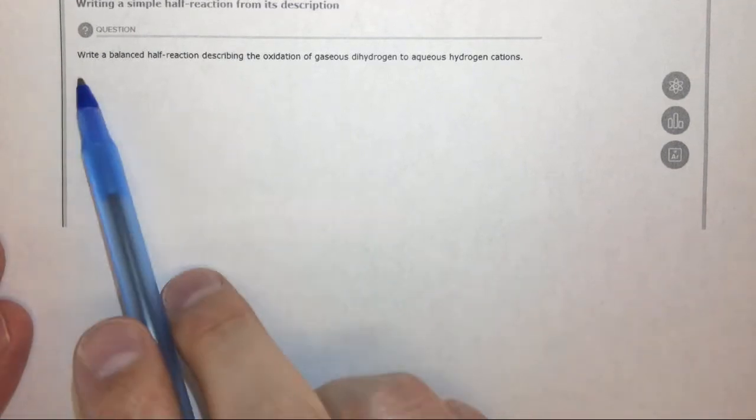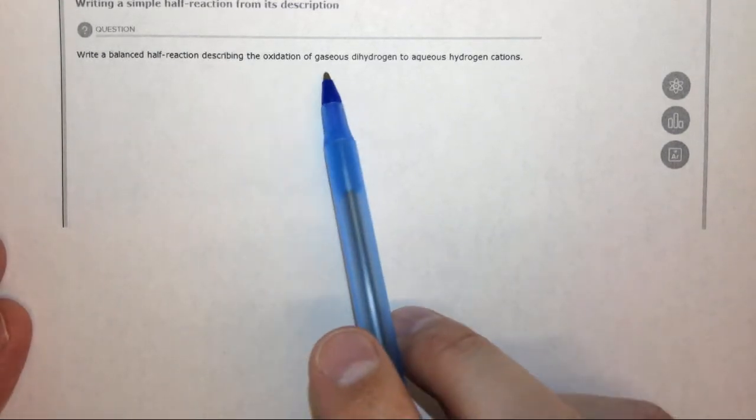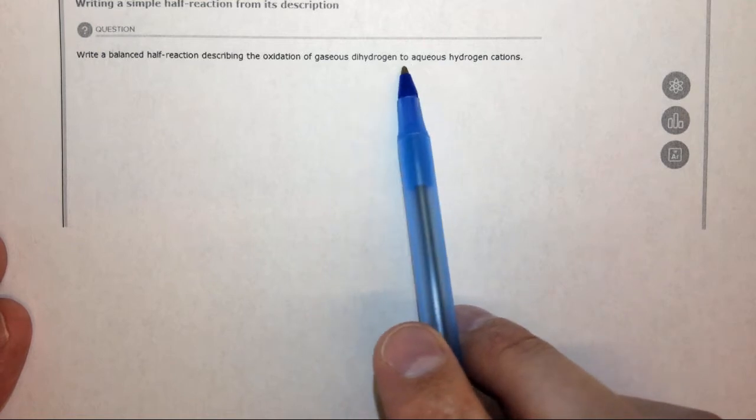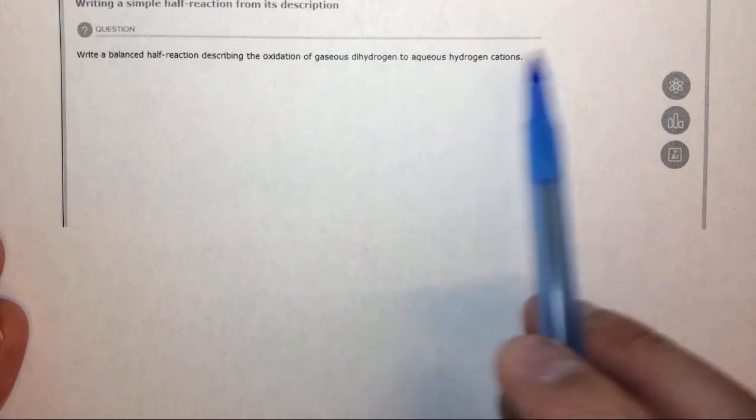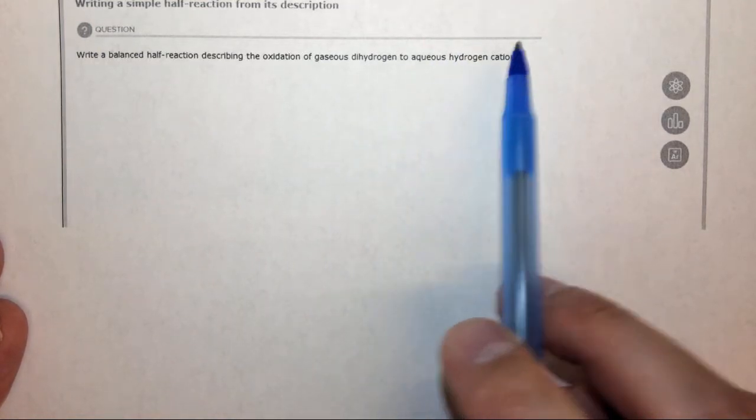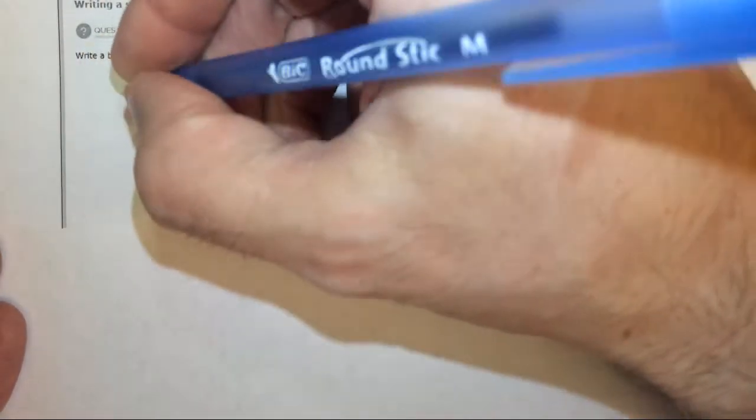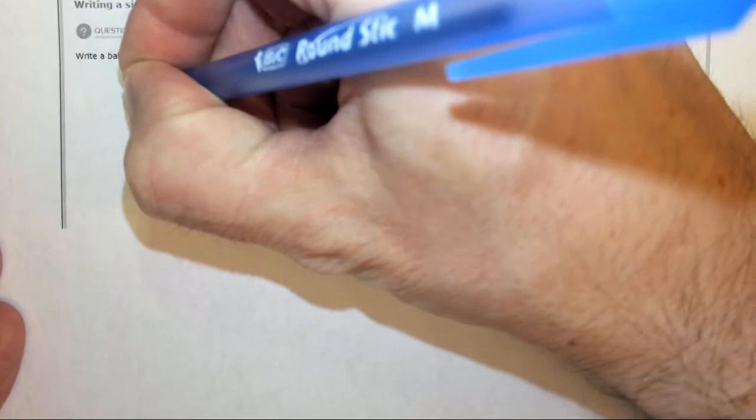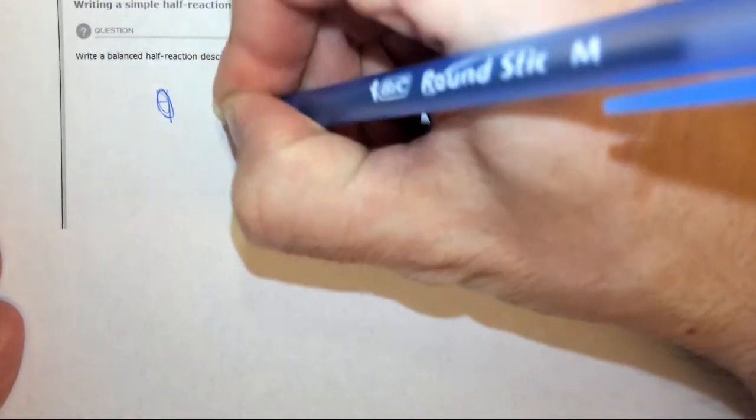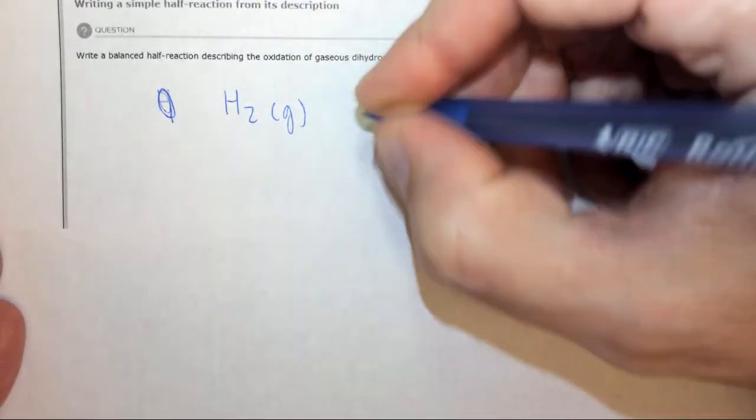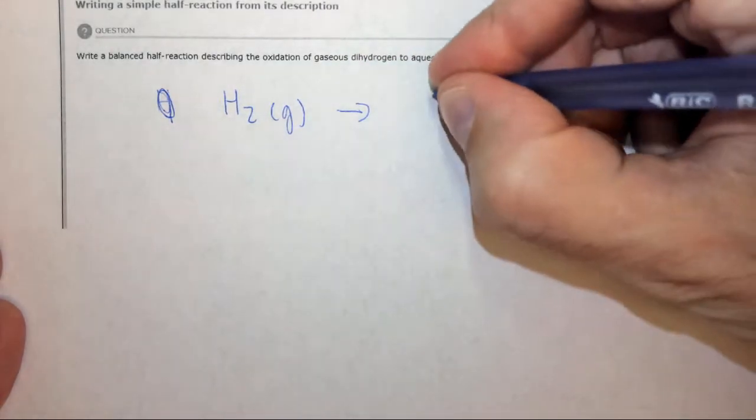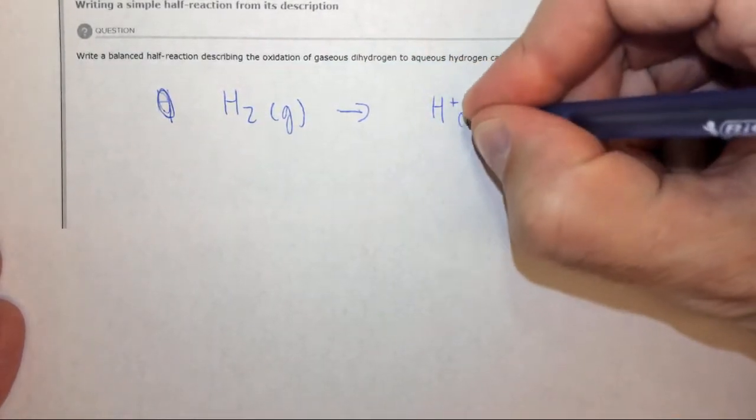In this question we're asked to write a half reaction describing the oxidation of gaseous dihydrogen to aqueous hydrogen cations. Hydrogen cations is H+. Essentially what we have is gaseous dihydrogen, which is a diatomic element, H2 gas yields H+ aqueous.